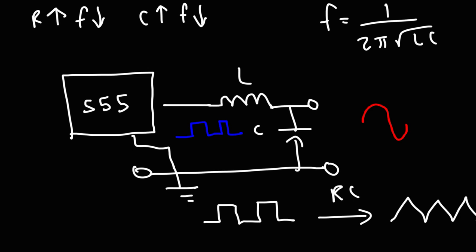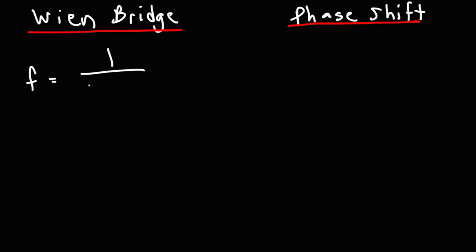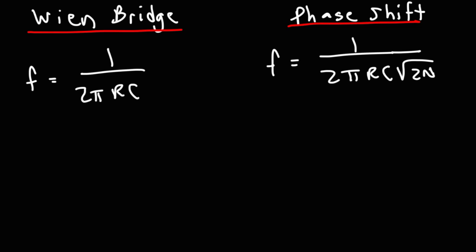The two other types of RC oscillators include the Wien bridge oscillator, which uses an RC network and an operational amplifier, and also the RC phase shift oscillator, which uses three RC networks and a transistor — you can also use an op-amp for the phase shift oscillator as well. For the Wien bridge oscillator, the frequency is 1 over 2πRC. For the phase shift oscillator, it's 1 over 2πRC times the square root of 2N, where N is the number of RC networks in the circuit.